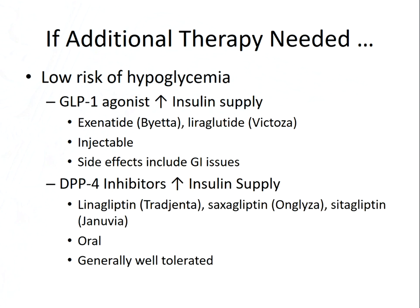Glucagon-like peptide stimulates the production of insulin by the pancreas. DPP-4 — dipeptidyl peptidase-4 — is an enzyme that breaks down GLP-1. So if we inhibit the action of that enzyme, it allows GLP-1 to stick around longer and to stimulate the production of more insulin. So a DPP-4 inhibitor is also going to increase the supply of insulin. These are oral drugs and they're generally well-tolerated, so they can be very useful in the management of hyperglycemia.